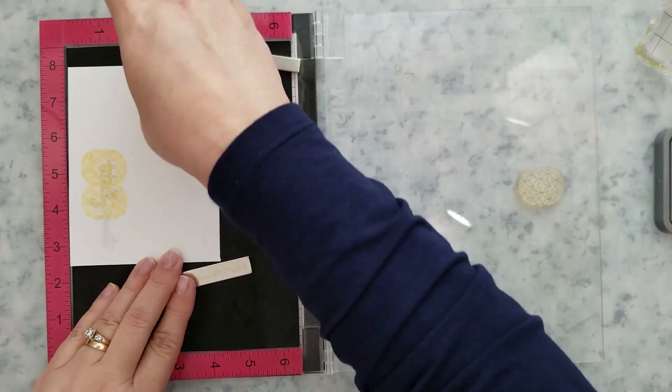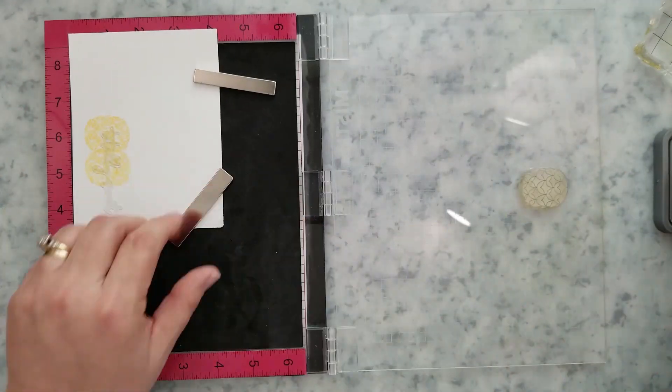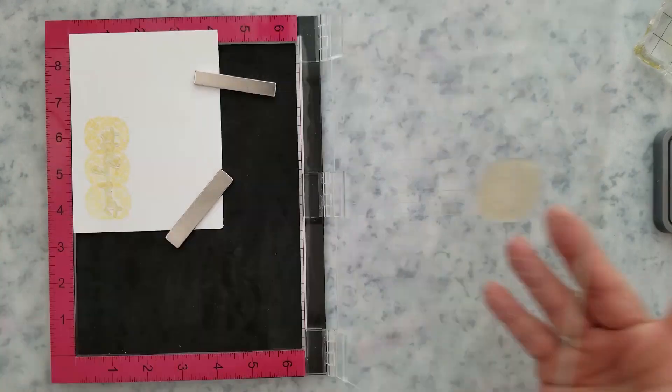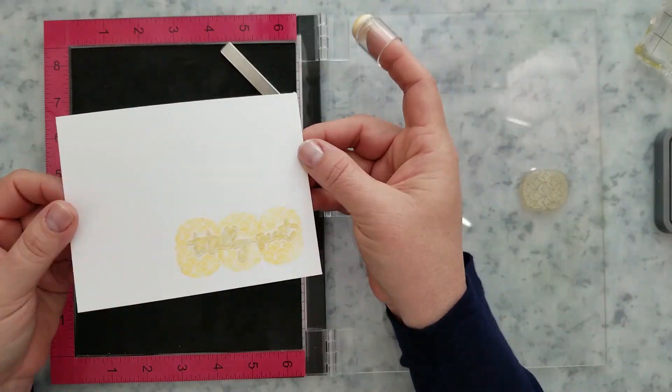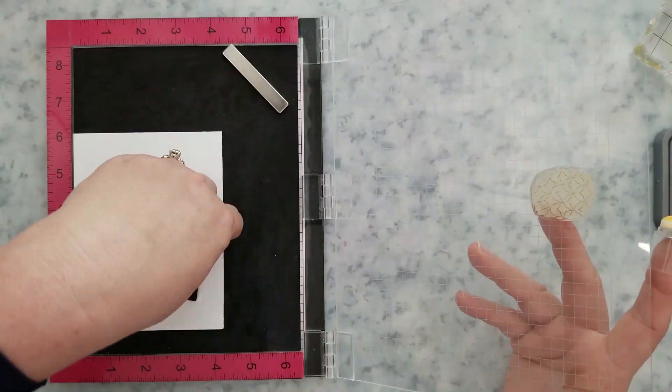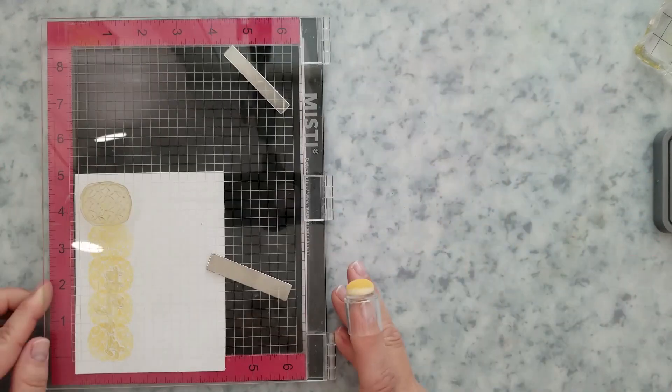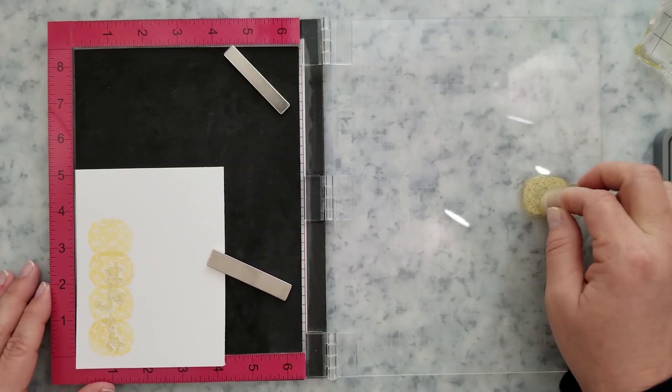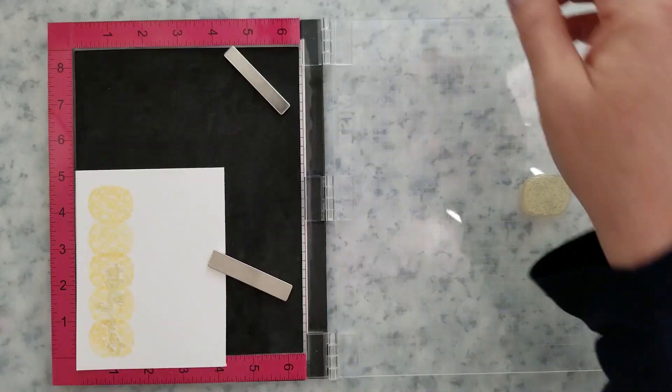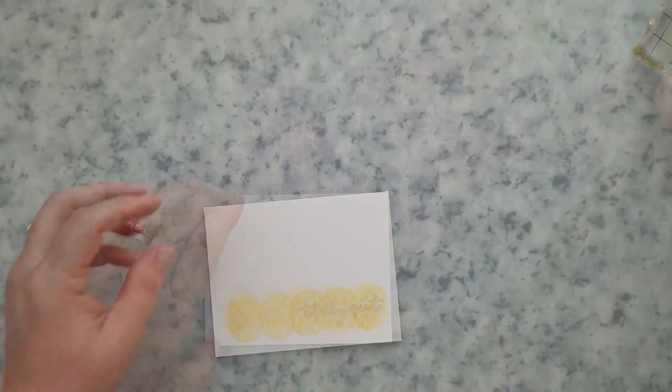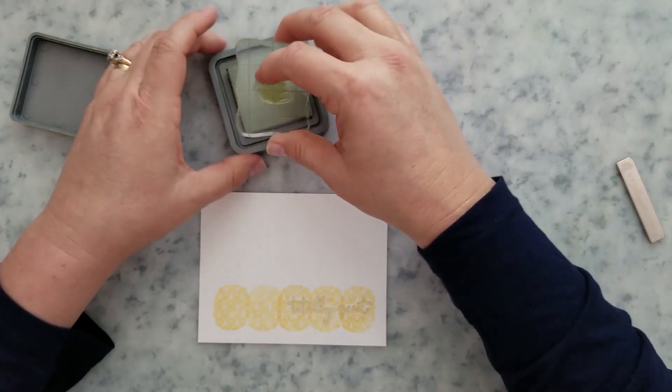So I'm using Distress Oxides in the colors Scattered Straw and Bundled Sage. I'm using ink daubers to apply the ink to the stamp because I want that ink to be light, and I knew that ink daubers would give me the lightest application. So again with the repeat stamping.